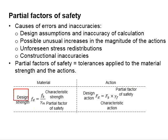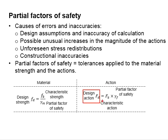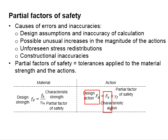The design strength of the material will be the characteristic strength divided by the partial factor of safety. With that, you are designing the elements with a lower material strength than its characteristic strength. This provides allowance to the materials to reach its characteristic strength. As for the actions, the design actions is determined by multiplying the characteristic actions with the partial factor of safety. Therefore, your design actions are normally greater than the characteristic actions.